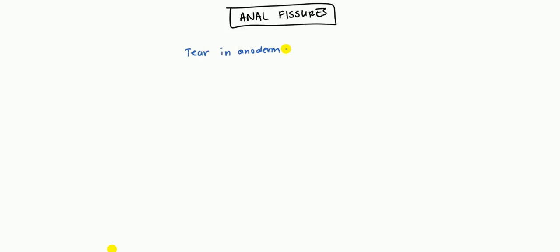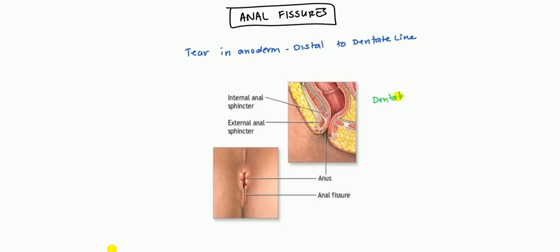Anoderm is the skin in the anus area. And in particular, in order to be called an anal fissure, it needs to be below, distal to the dentate line. The dentate line is going to be a line right above there, and the anal fissure has to occur below there. And the reason is because under that area, that's where you would tend to feel pain.